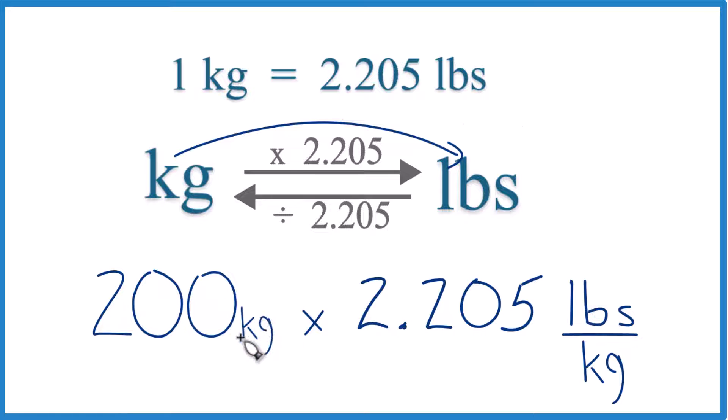Because now we multiply, we have kilograms on top and on the bottom. They cancel out. So it's just 200 times 2.205 pounds. And that equals 441.0. And we have pounds here, that's what's left.